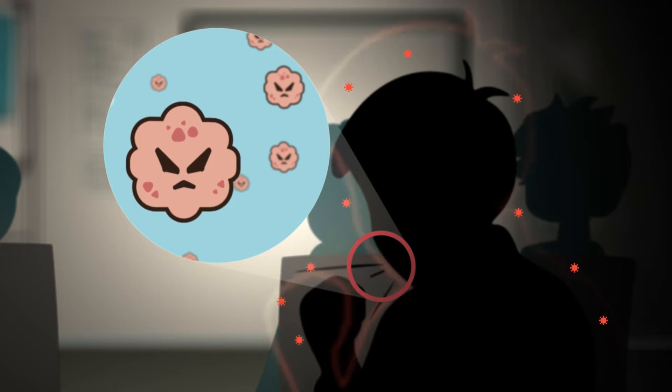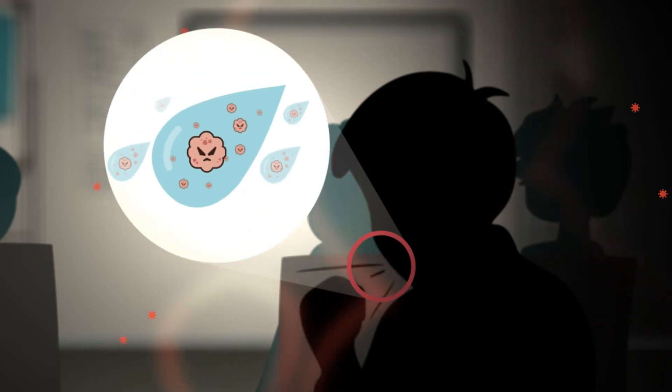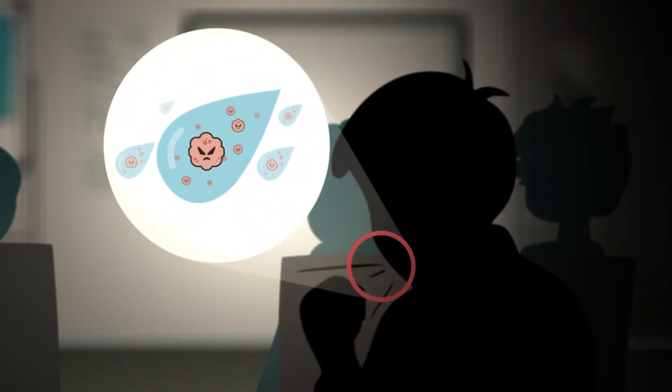The measles virus spreads through tiny droplets your fellow recruit sends into the air when he breathes out, talks, sneezes, or coughs.